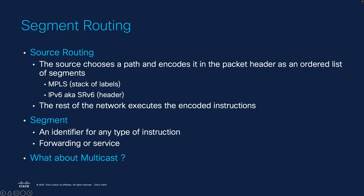Generally, Segment Routing takes information from the control plane and inserts it inside the packet to simplify the network. The source chooses a path which is encoded within the packet header as an orderly list of segments. The segment can be an identifier for any type of instruction, such as forwarding or service.